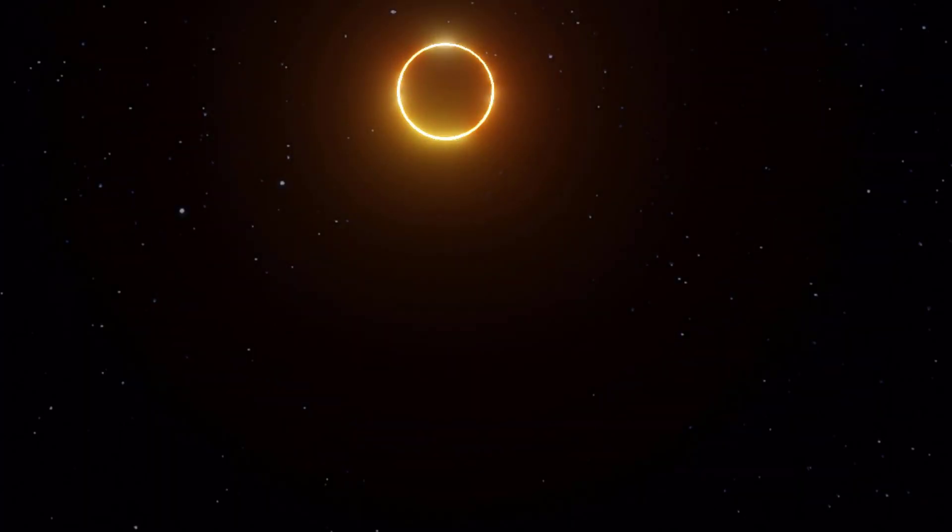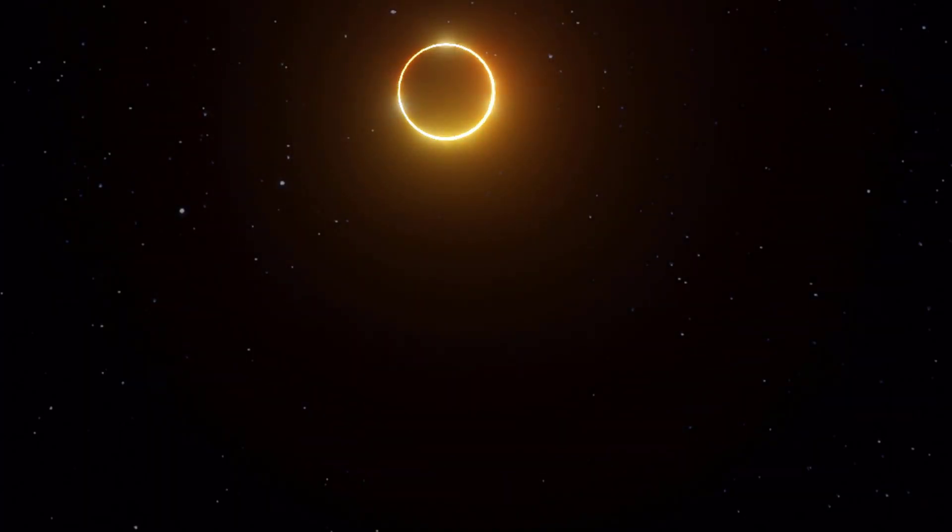Total solar eclipses are some of the most breathtaking events in nature. As the moon moves across the sun, the sky gets dark and the temperature drops. It's as if someone has turned off the sun, leaving only a glowing ring around the edge of the moon.